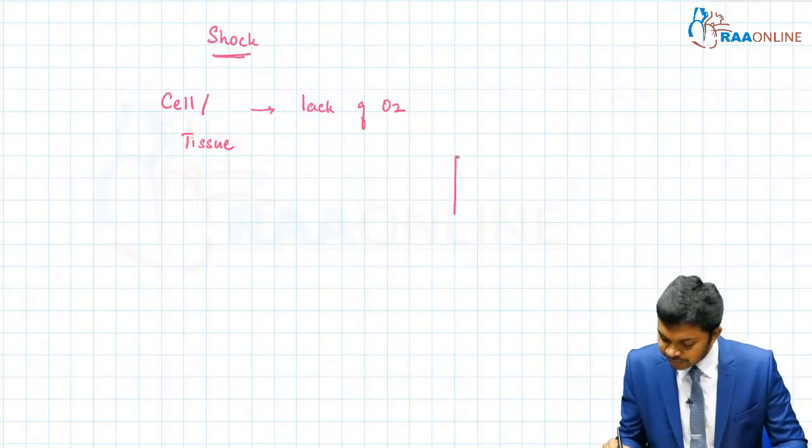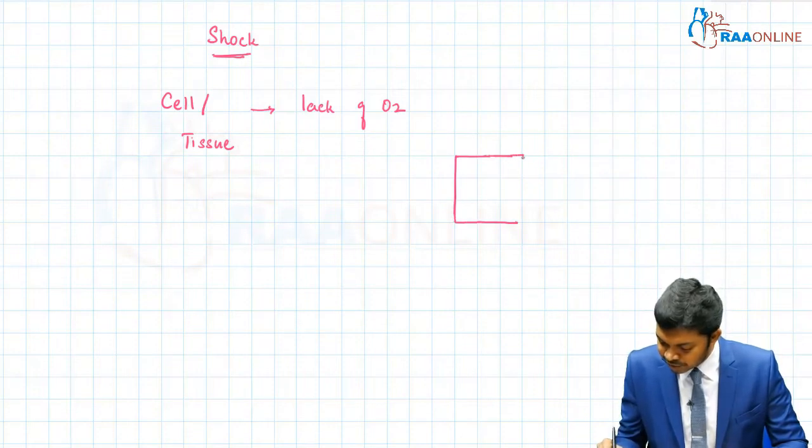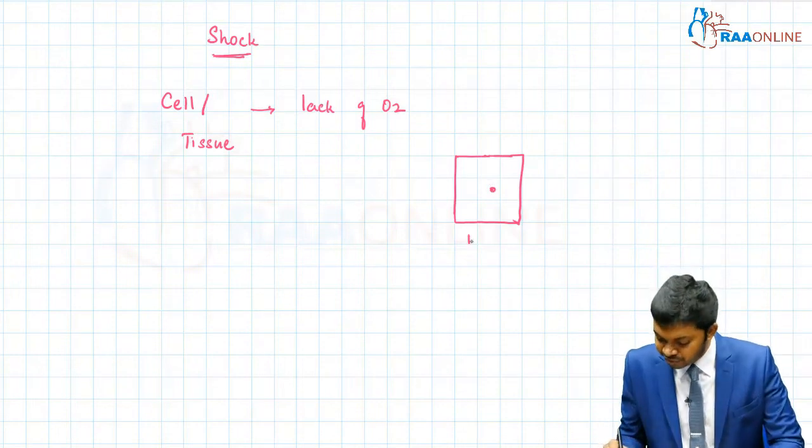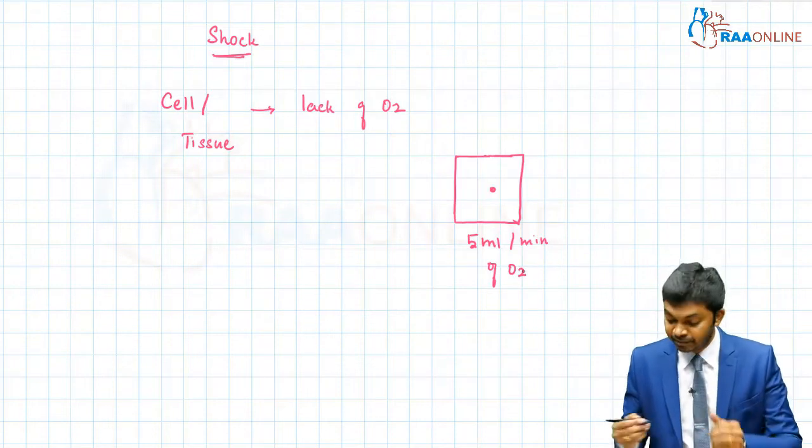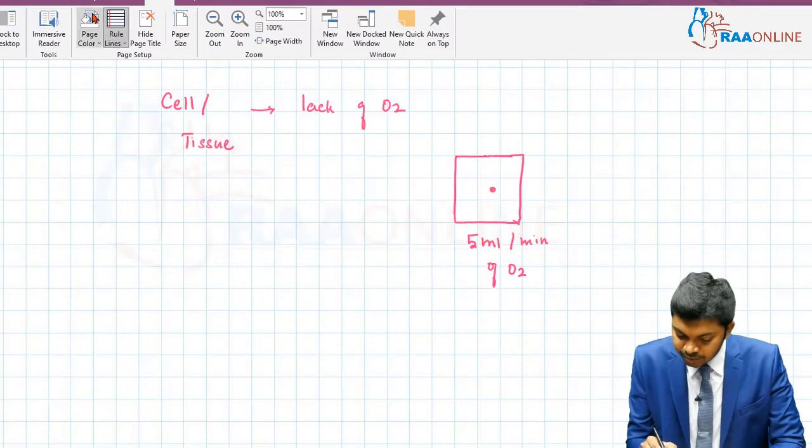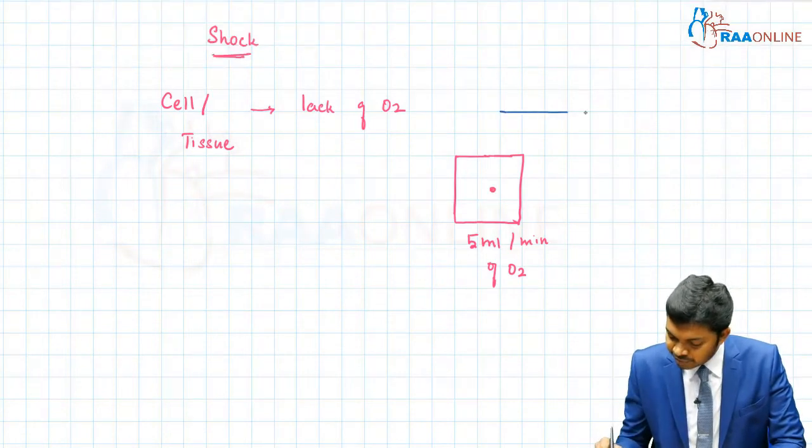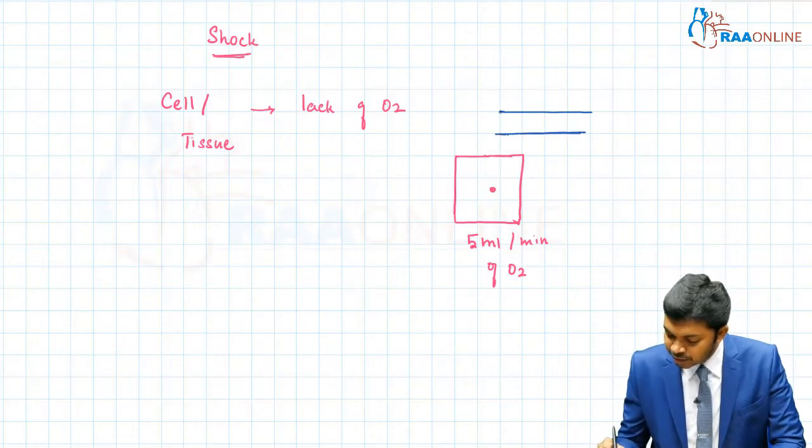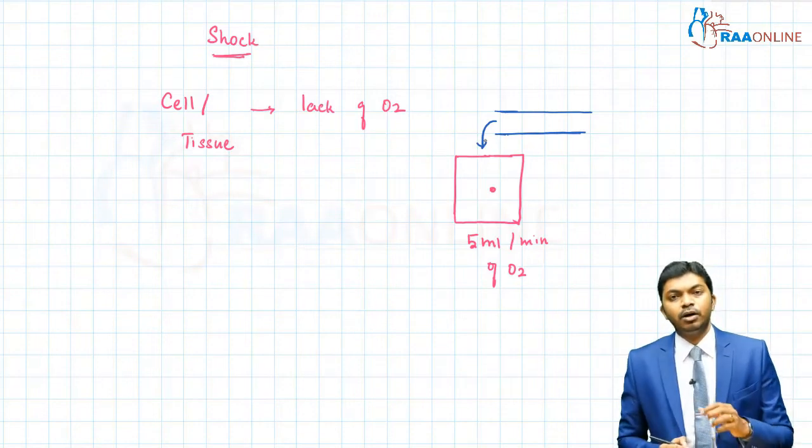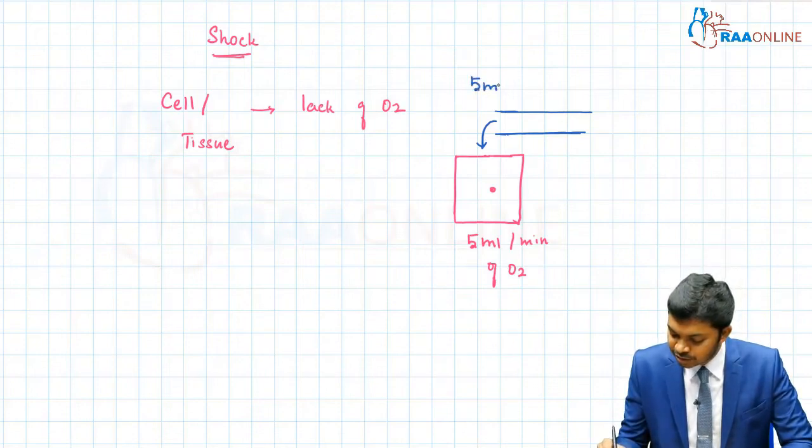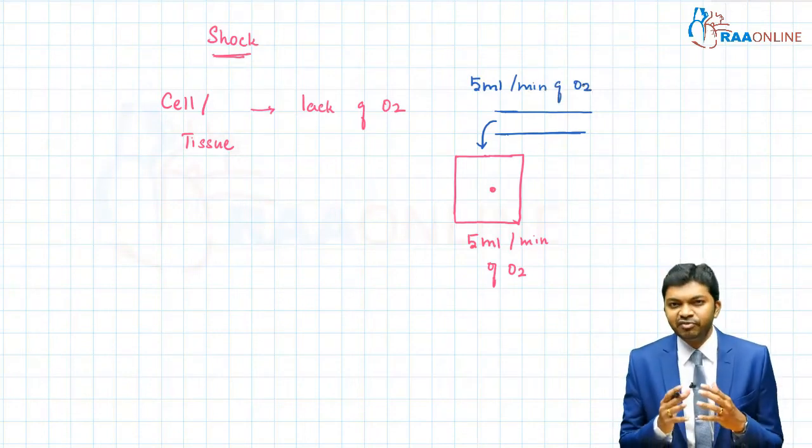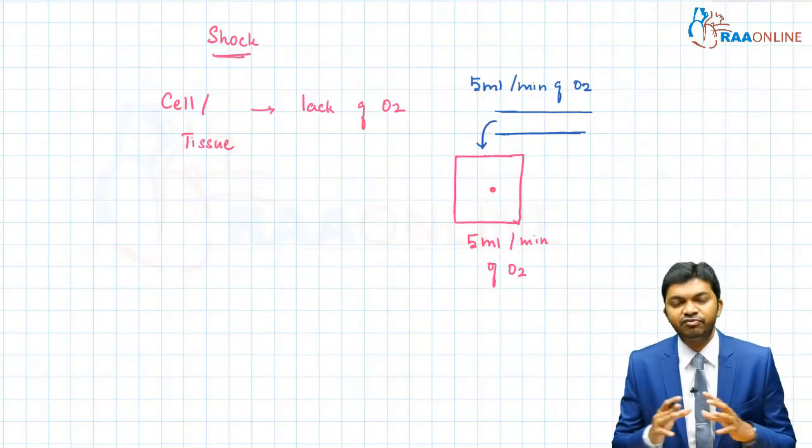Let us take up a cell, doctors, and this cell is in need of 5 ml per minute of oxygen. The demand, the need is 5 ml per minute of oxygen. To this cell, we have a capillary that is going to bring oxygen to the point of the cell's demand. The capillary is going to bring 5 ml per minute of oxygen. So the demand of a cell is perfectly met by capillary blood flow and the cell survives, the cell functions, everything is perfect.